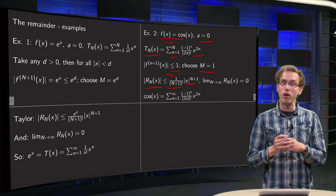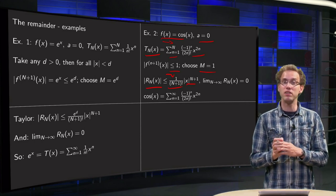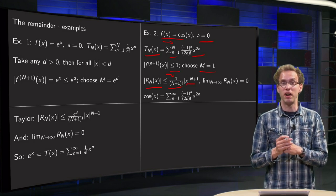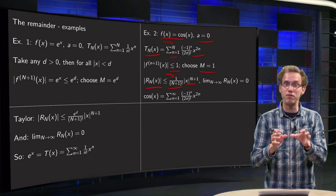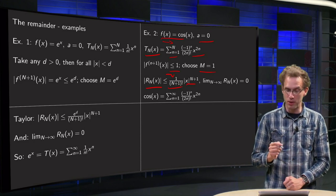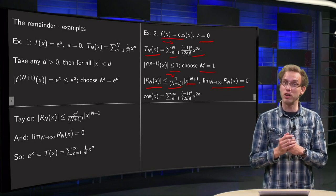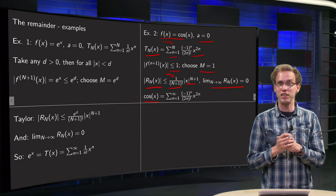And again, for all finite x, if capital N goes to infinity, x to the power N plus 1 is a finite number, and you divide by N plus 1 factorial which goes to infinity, so you have something finite divided by infinity equals 0 in the limit. So the remainder goes to 0, which means that cosine of x equals its Taylor series.